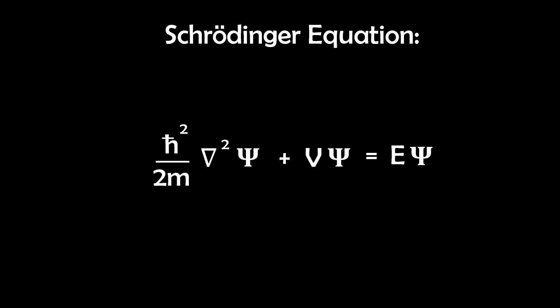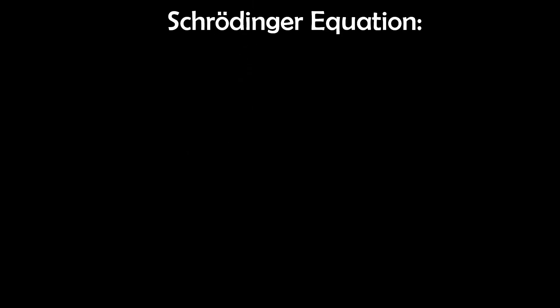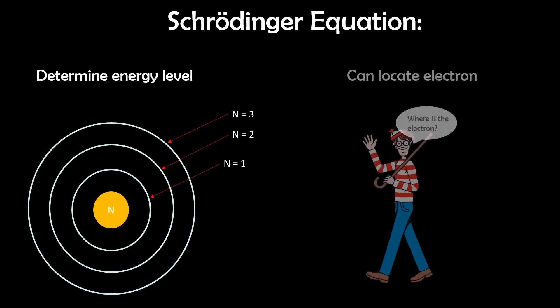This equation is essentially the f equals ma of quantum mechanics. So while f equals ma lets us predict things like velocity of a falling ball, the Schrödinger equation instead determines things like energy levels and the probability of an electron's location.